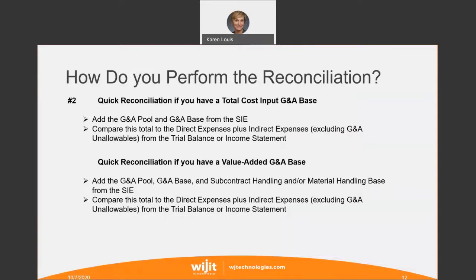If you have a value-added G&A base, a quick reconciliation is to take your G&A pool, your G&A base, and your subcontract handling and/or material handling base from your statement of indirects and add all those together. Then compare that number to your total direct expenses and indirect expenses from your trial balance or income statement. As a consultant, I do this all the time with clients, and you'd think the two amounts would tie — but a lot of times there's a variance, and clients are usually leaving money on the table.